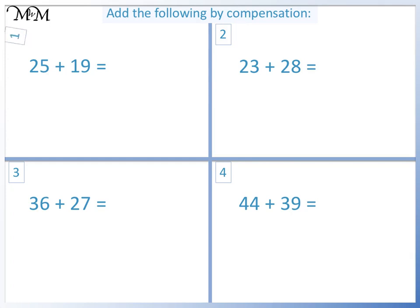Question 1: 25 plus 19. We can add 1 to 19 to make 20. 25 plus 20 equals 45. Because we added 1 in our question, we need to subtract 1 from our answer. 25 plus 19 equals 44.